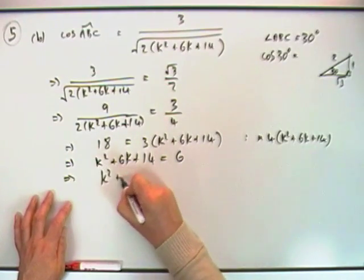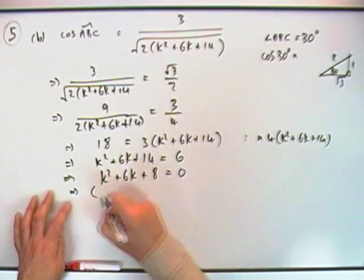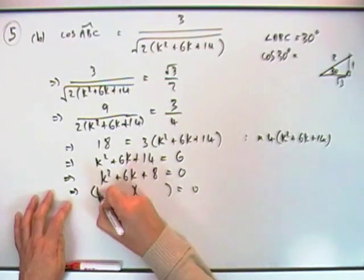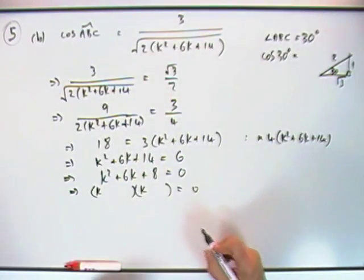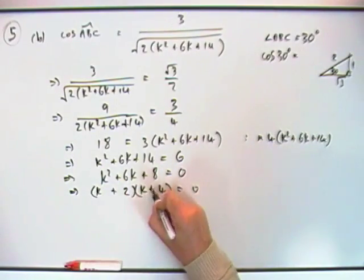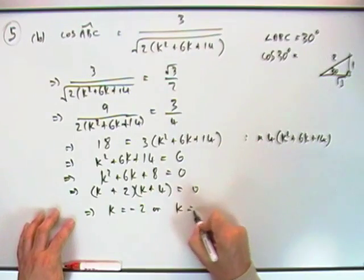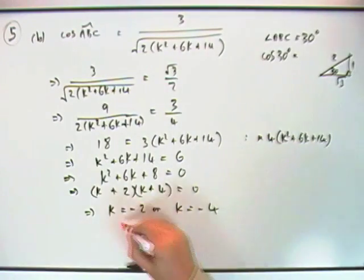That's a quadratic—take it all to one side, 6 comes over, drops that down to 8. Factorize it—that must be 2 and 4, plus and plus. So finally k either equals -2 or k equals -4.